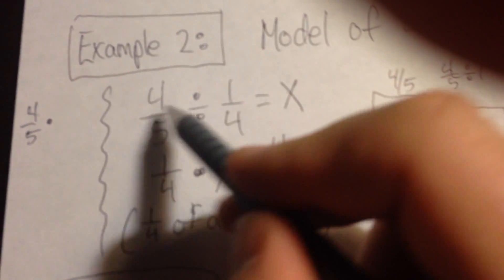So if I put this over here and did the reciprocal, four-fifths times the reciprocal, which would be four over one. I'd get sixteen-fifths.